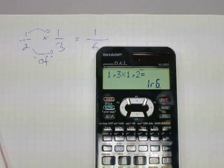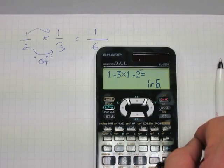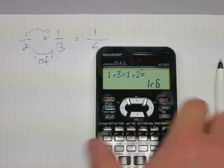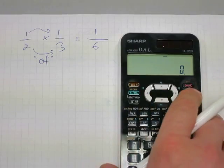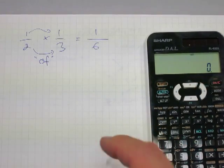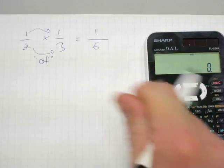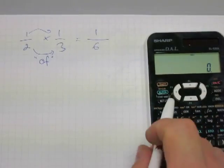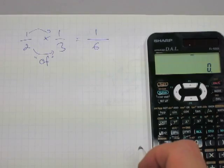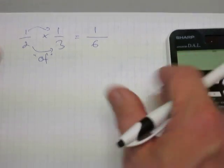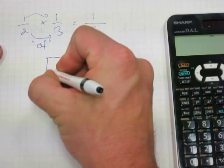You can do the same on a calculator: press one, ABC button, three, times, one, ABC button, two, equals — and you get one over six. That verifies our fraction multiplication is correct. You can also make a decimal out of it by toggling the ABC button.